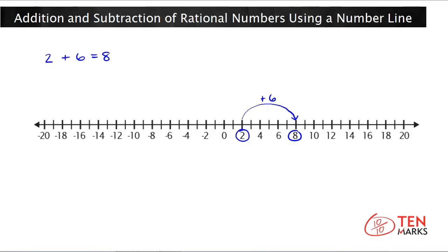Now let's add a positive and a negative number. Let's say you want to add 16 and negative 4. To add 16 plus negative 4, you would start at the number 16 and go to the left 4. Negative 4 is the same thing as subtracting 4, so you'd move to the left. The number you land on is 12.